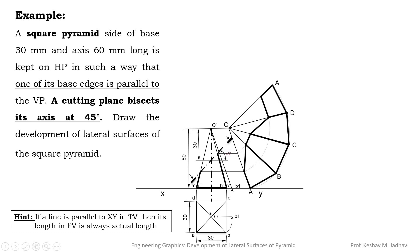We also update the top view by removing the upper part. The cutting plane does not pass through the square base, so the square base remains intact, but the slant edges are cut. We take the projection of the intersection points into the top view, remove the upper part, and draw the remaining visible slant edge portions. We can add hatching lines to the cut section. In this way we draw the development of lateral surfaces of the square pyramid when cut by a cutting plane at a certain inclination. Thank you.